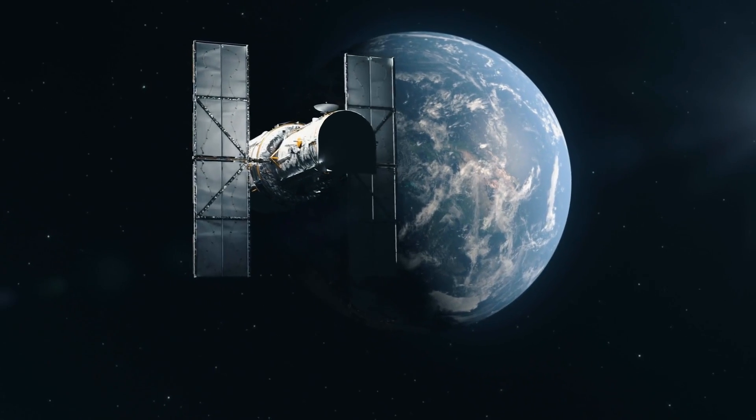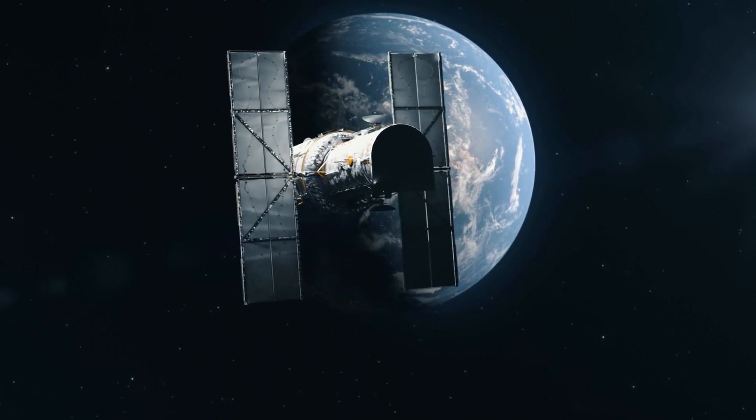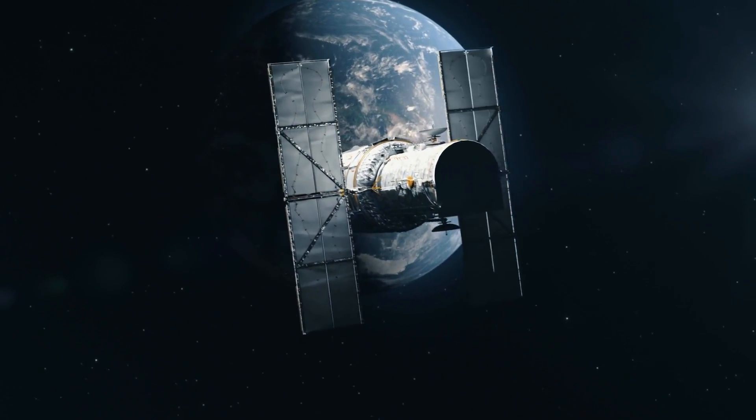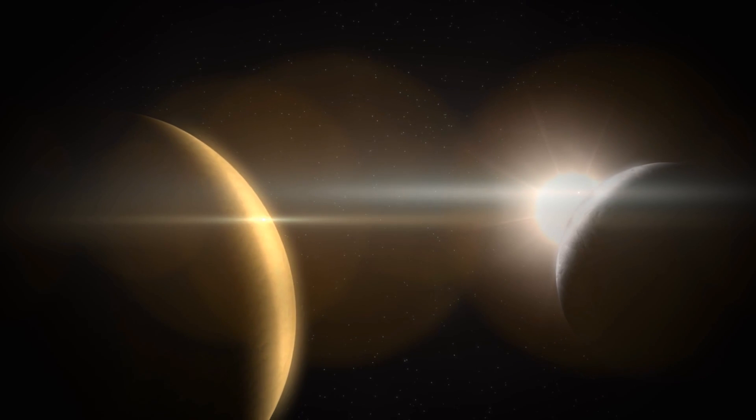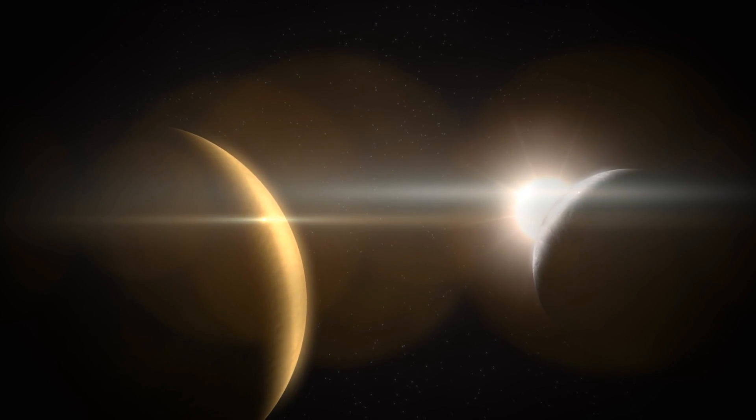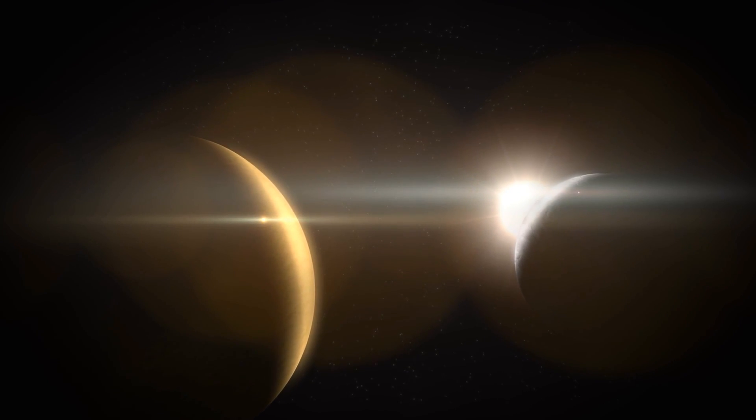When we use telescopes to study stars, they often detect dips in the light emitted by these stars. It's like when you're looking at a bright light bulb and suddenly someone walks in front of it, causing a brief interruption in the light you see. Generally, these dips in starlight are caused by exoplanets passing in front of their stars, but things got really interesting with Boyajian's star.